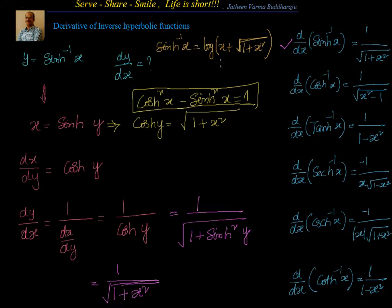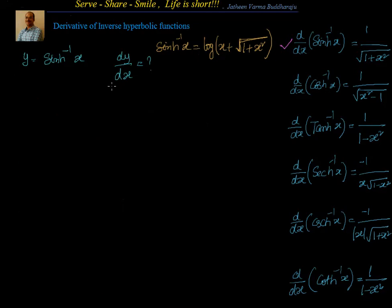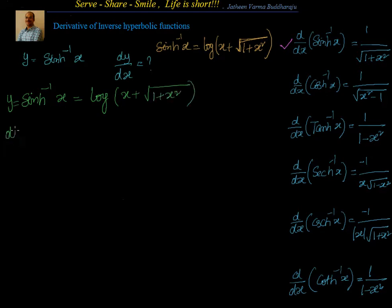Now let us see how to find that using the logarithmic function definition. Let us find the derivative using the definition formula: sinh⁻¹(x) equals log of x plus square root of 1 plus x square. So y equals sinh⁻¹(x) equals log of x plus square root of 1 plus x square. Now I want to find dy/dx. We have logarithm of some function, so we have to apply the chain rule because the variable is itself a function — we are looking at composite functions.